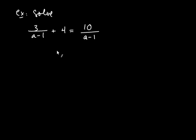Let's solve 3 divided by a minus 1 plus 4 equals 10 divided by a minus 1. Here the denominator is a minus 1. Remember, when you're looking for an LCD, the LCD doesn't just have to be a monomial. It can be a binomial with more than one term. I'm going to multiply both sides of this equation by a minus 1 over 1. I'm going to write a minus 1 in parentheses because I want to multiply by all of a minus 1, so I need the whole thing in parentheses. On the right-hand side, it's going to be a minus 1 over 1.